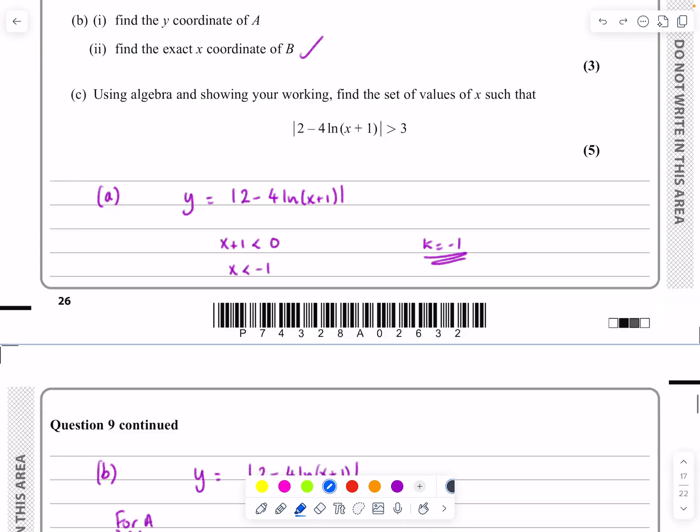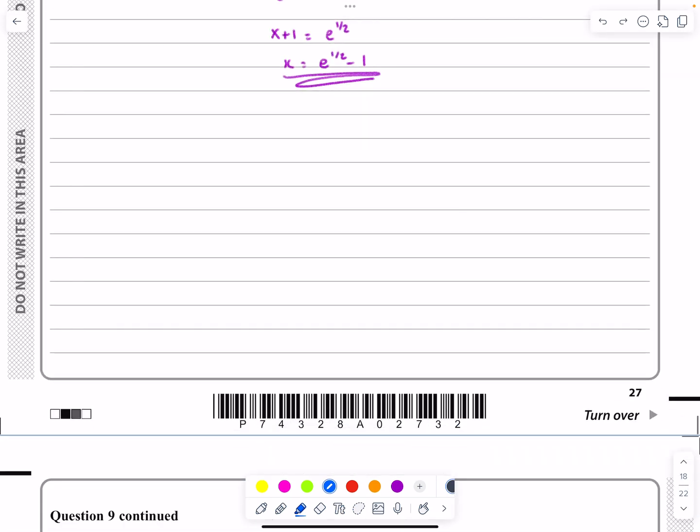So what I'm going to do, let's go back and actually do that algebraically now. Explain what I'm talking about. So for part c we're saying, let's tell them what we're doing first of all. So modulus of 2 minus 4 ln(x+1). And we want to know when it's greater than 3.